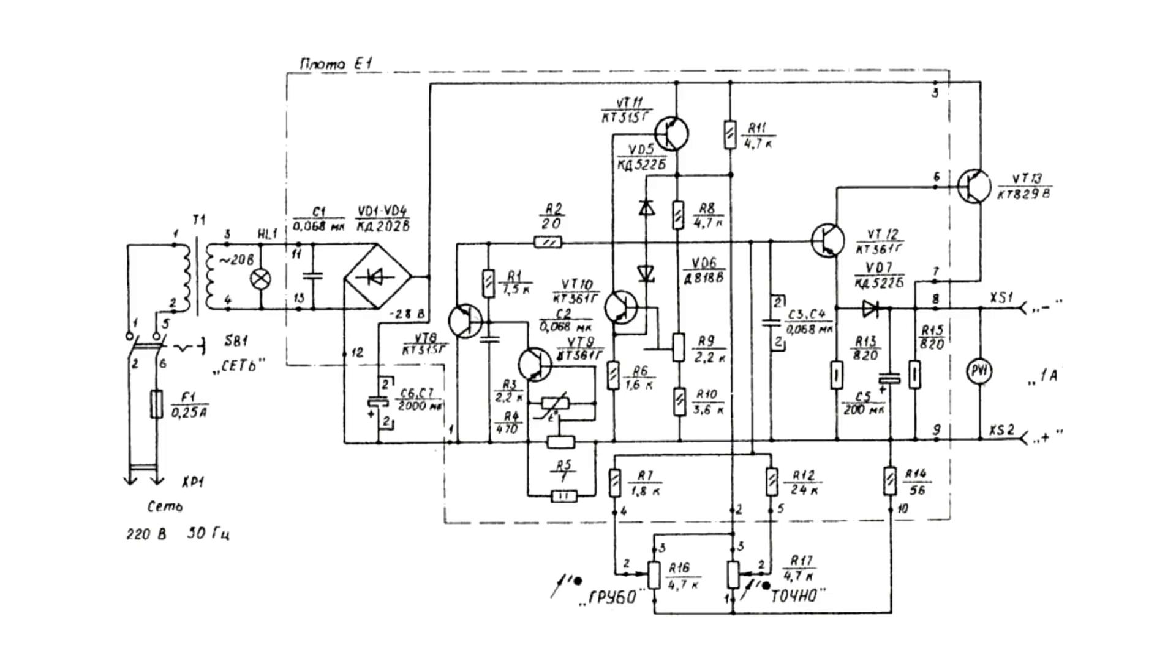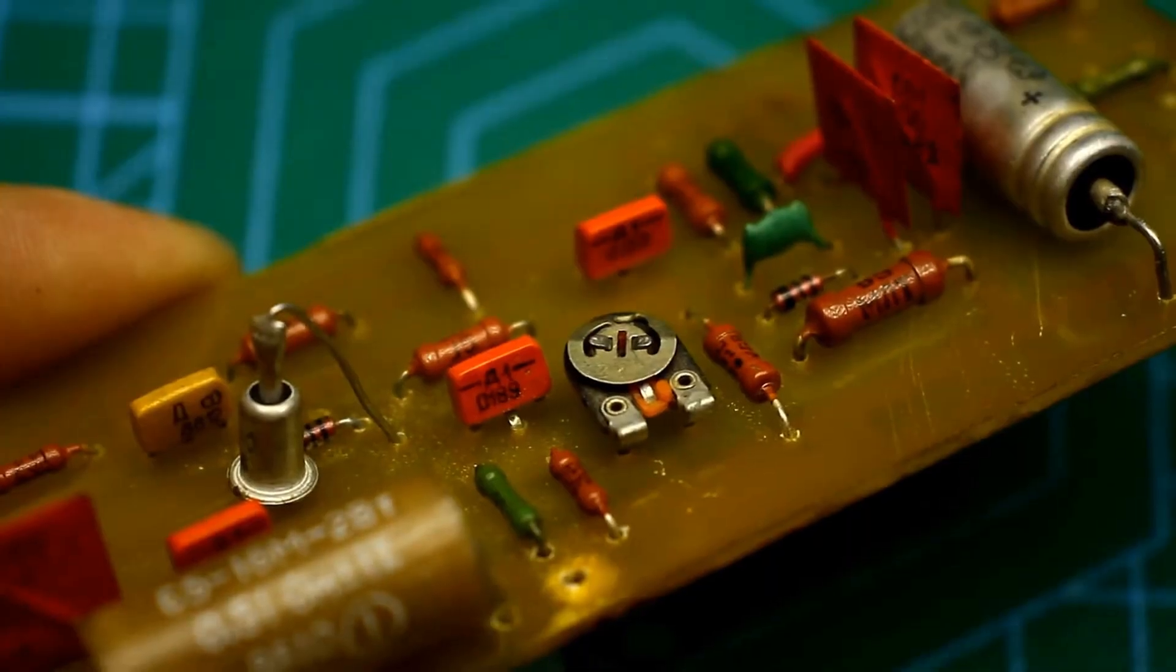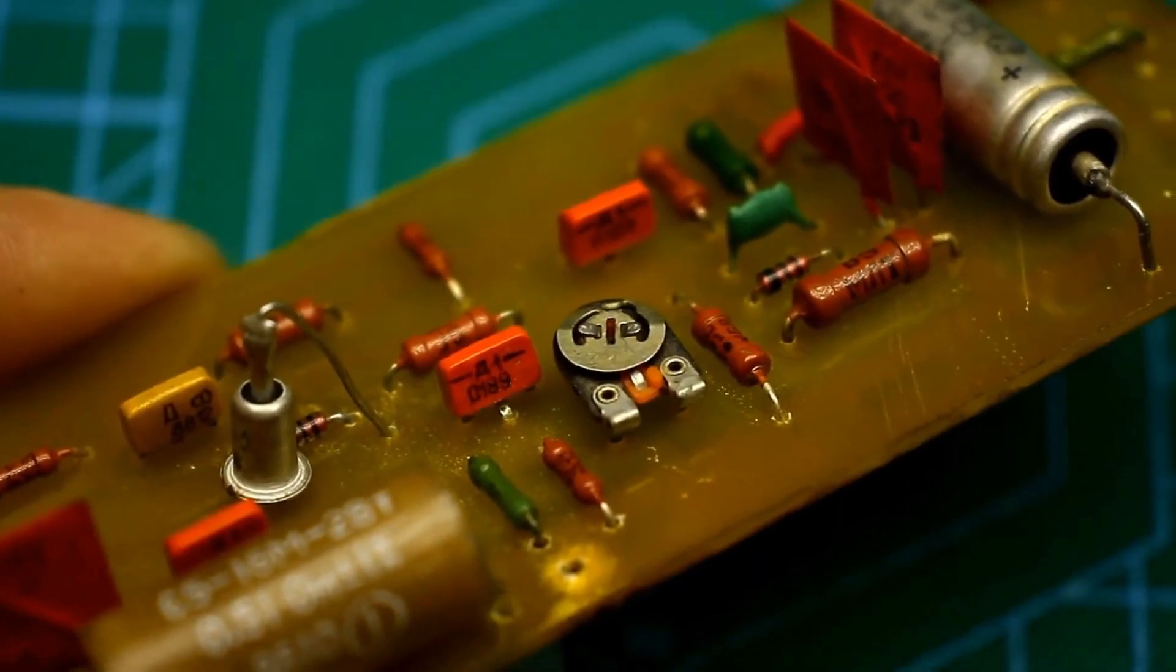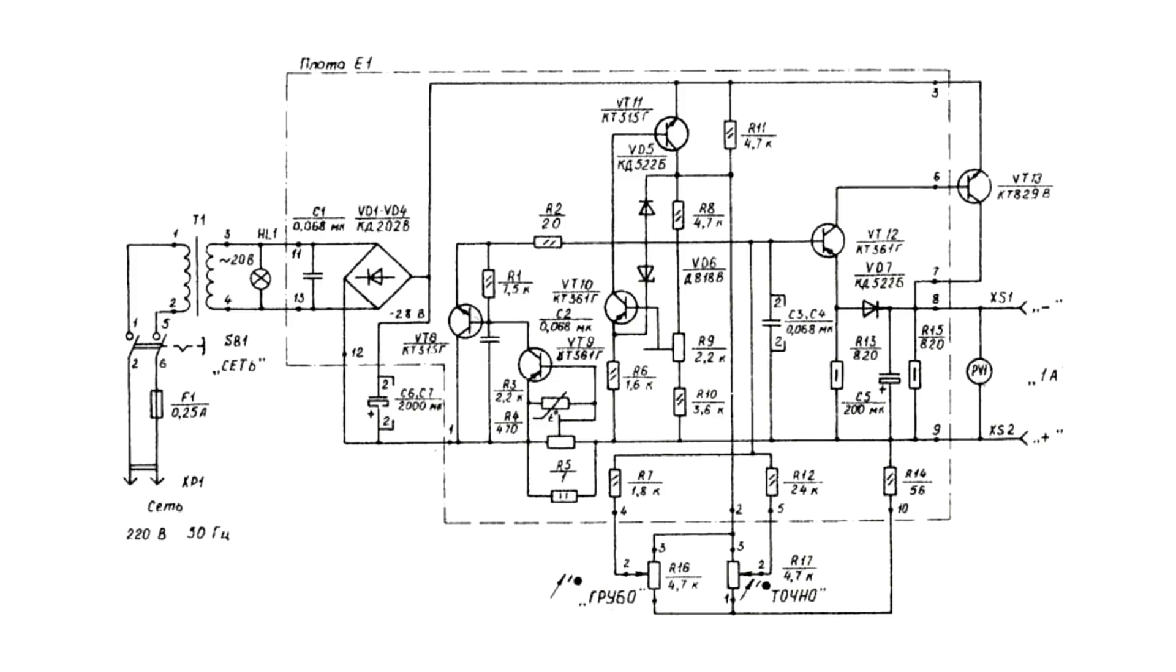It should be noted that the output voltage of the circuit is always lower than the input voltage, in this case, by about 2 to 3 volts. The reference voltage source is built on a pair of KT315, KT361 transistors, and a Zener diode. Then, the output voltage from the reference source is fed through a divider to the amplification stage.